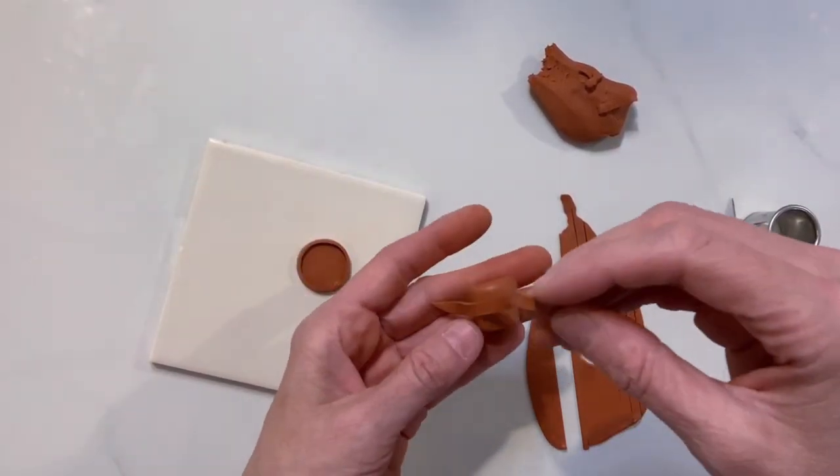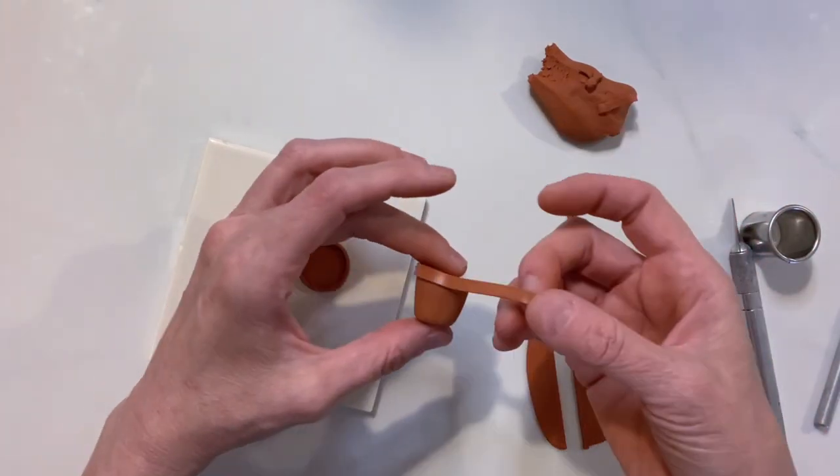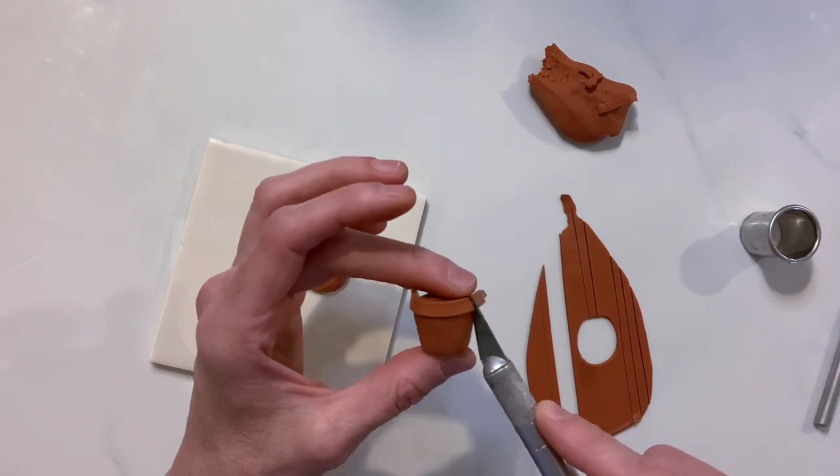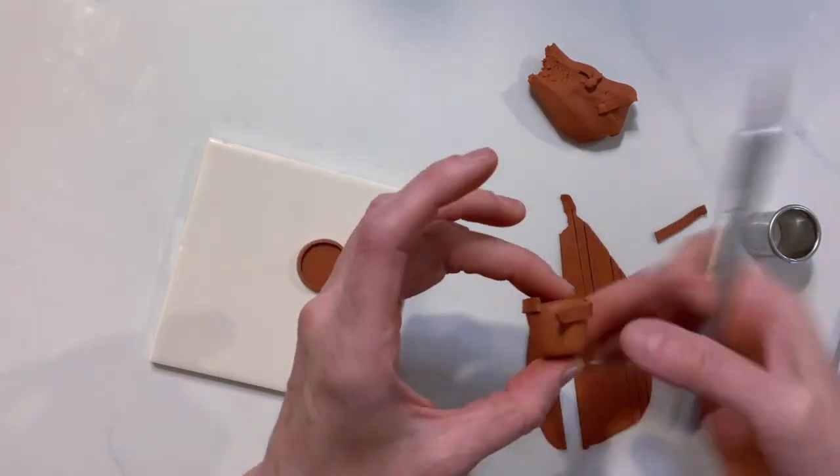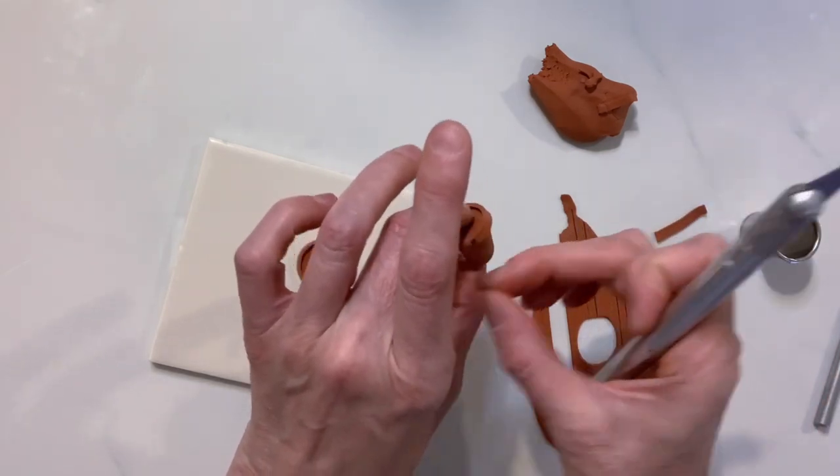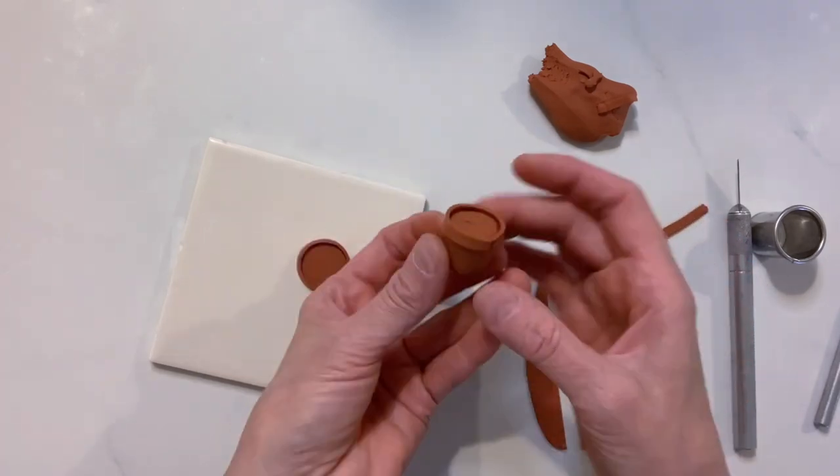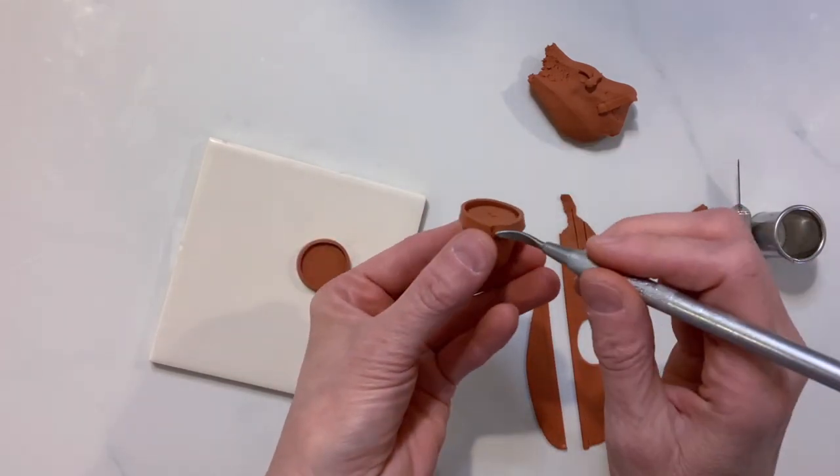Now we're going to take the main part of what is going to be our terracotta pot and I'm going to take one of those strips and put it around the top edge. That strip is going to come up above the actual edge of the pot and it will give you the look of a terracotta pot.